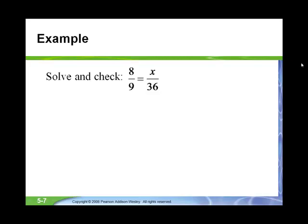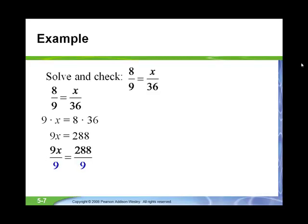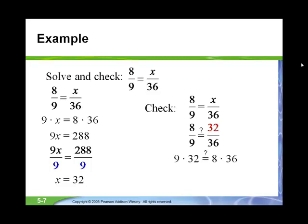For example, we have a proportion 8 over 9 equals x over 36, and we want to solve for x. We do cross multiplication and get 9 times x equals 8 times 36. So your equation is 9x equals 288. To solve for x, we divide by 9 on both sides, and 288 divided by 9 is 32. You put 32 back into the original equation to check, and you get 8/9 = 32/36, which simplifies to 8/9 = 8/9. So your final answer is x equals 32.